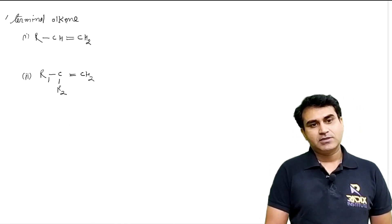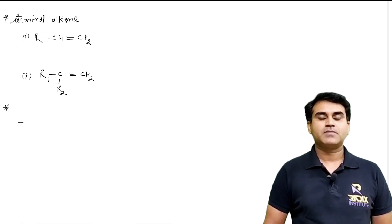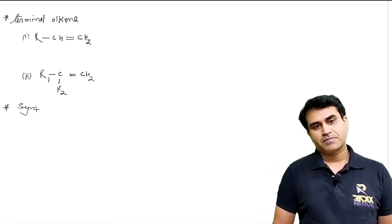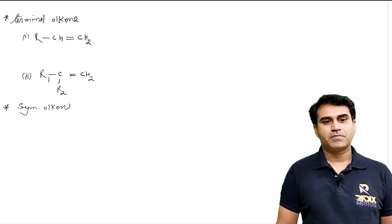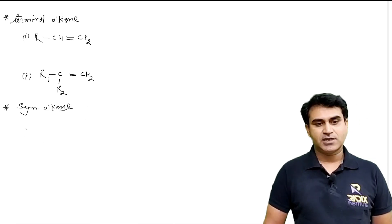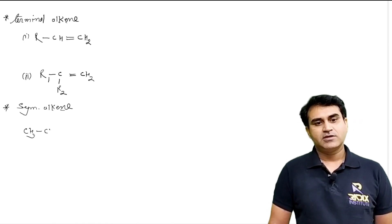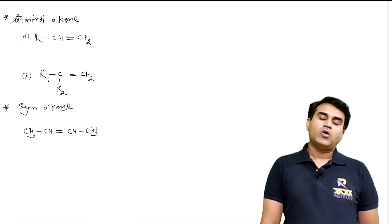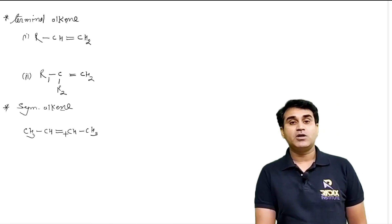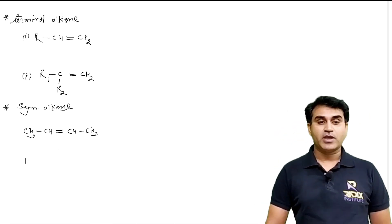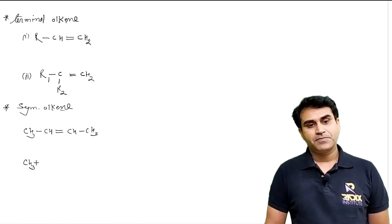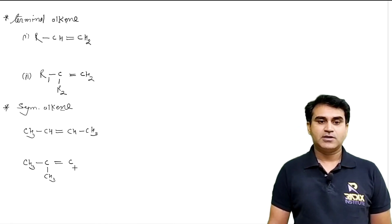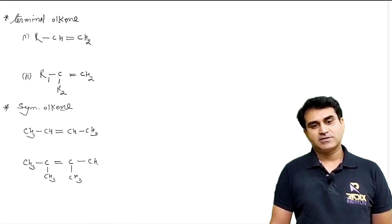इस terminal alkene के बाद हम एक alkene लेते हैं - symmetric alkene. Symmetric alkene जैसे CH3-CH=CH-CH3. On both sides of the double bond the number of carbon atoms are same. एक और: CH3-C(CH3)=C(CH3)-CH3.